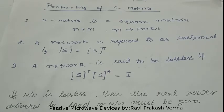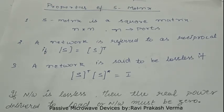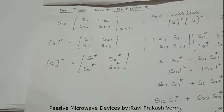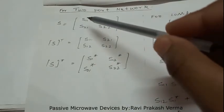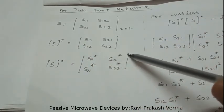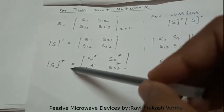There are some properties of the S-matrix. First, the S-matrix is a square matrix, meaning the number of rows equals the number of columns. Second, a network is referred to as reciprocal if S equals its transpose — that is, the scattering matrix and its transpose are equal. Third, the network is lossless if S-transpose multiplied by S-conjugate equals the unitary matrix. For a two-port network, the S-matrix has two rows and two columns; the transpose and conjugate of the matrix are given by their respective equations.